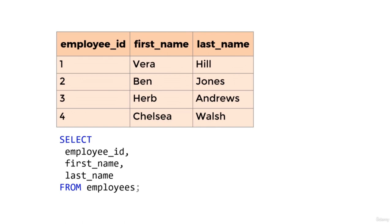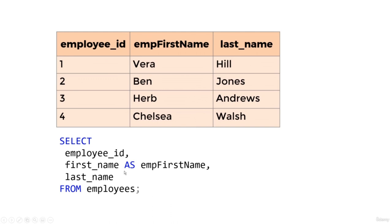For example, let's rename — i.e., alias — the column first_name to emp_first_name. We write: first_name AS emp_first_name. The column names remain unchanged in the underlying employees table — we've just temporarily renamed the first_name column in the query result. The AS keyword is optional, but it is good practice to use it as it makes the code more readable.